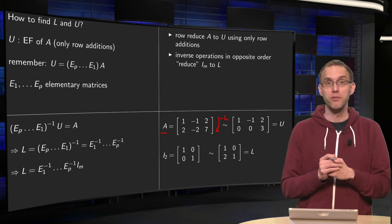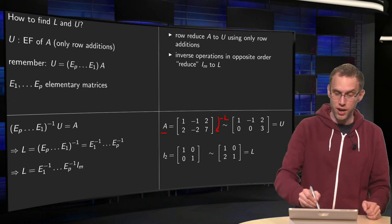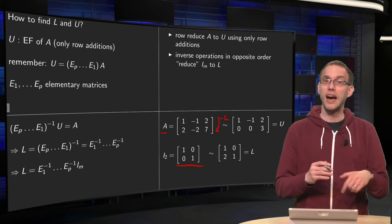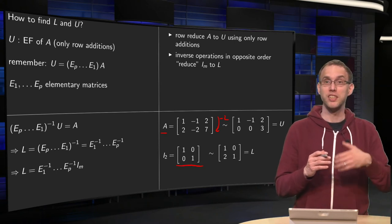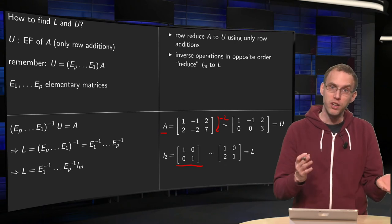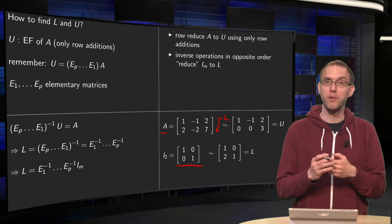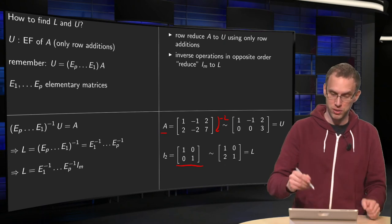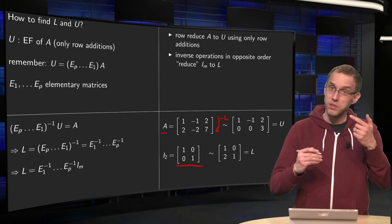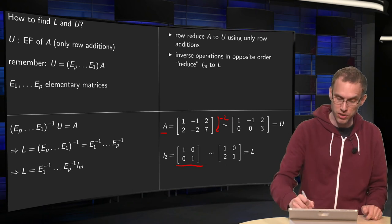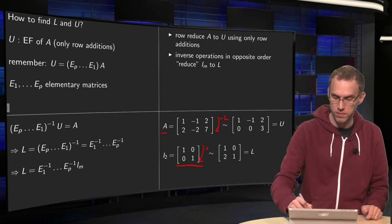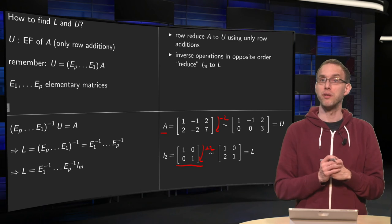How do you now find your L? You start with the identity matrix, and you do the inverse operations in inverse order. There is only one operation, so that is easy. You do this one operation, but then its inverse. So, instead of subtracting twice the first row from the second, you have to add it twice. And there you have your matrix L.